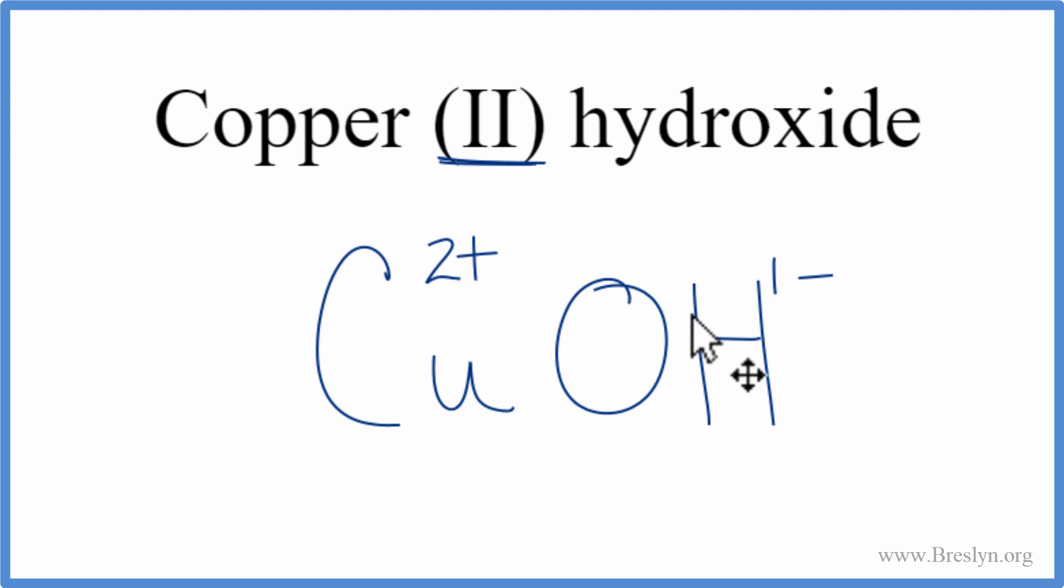We can use the crisscross method. Take the 1 and move it over here, the 2 and move it over here. We don't write the 1 by convention. Get rid of these charges. Finally, we need to put parentheses around the hydroxide since it's a polyatomic ion.